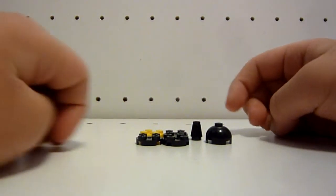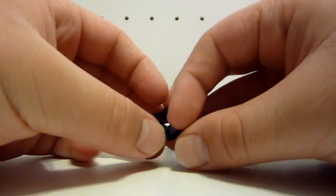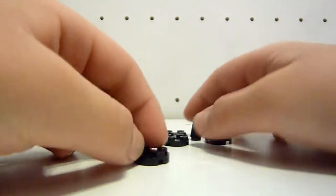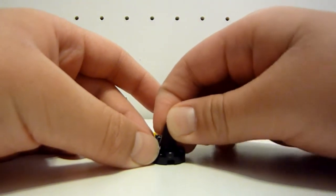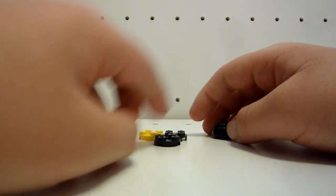So first you take one of the two by two round pieces, and you put a cone on top of it, one of these cone things. And it should be like that, and then you put that to the side.